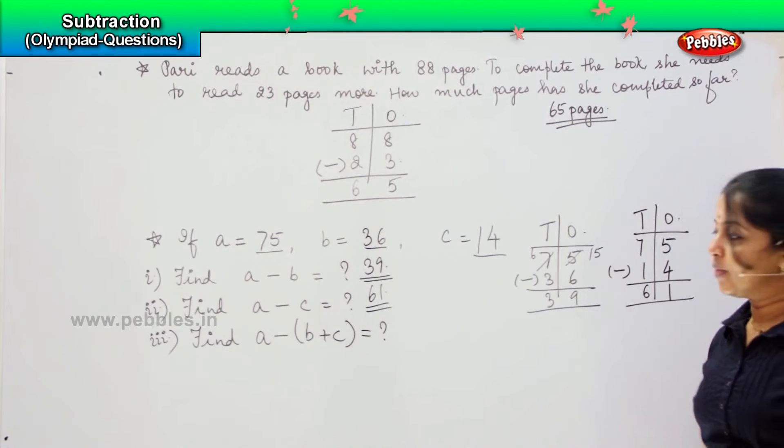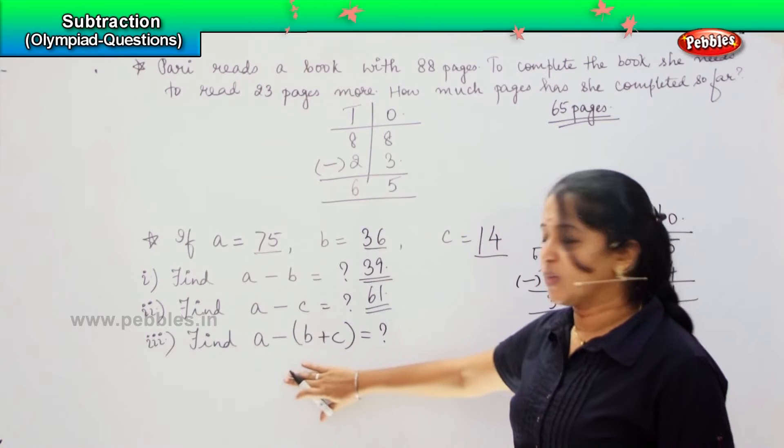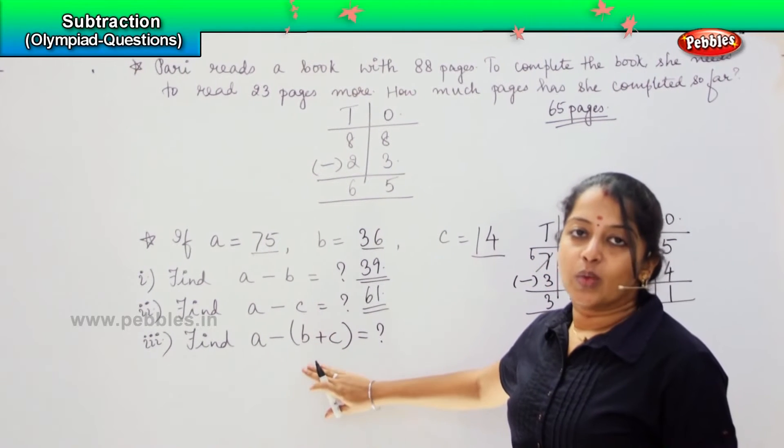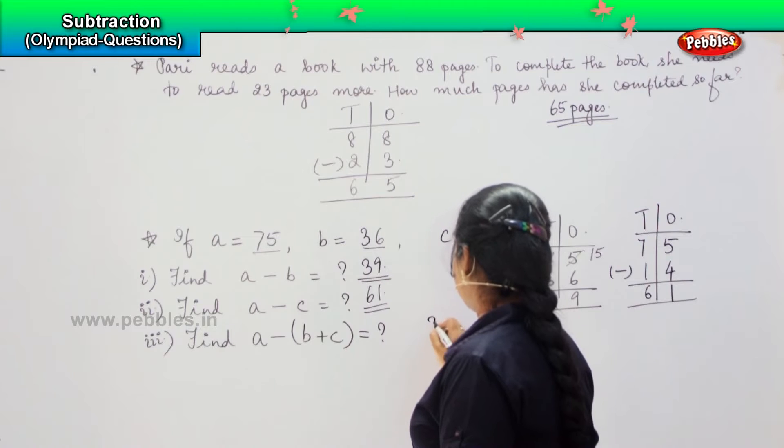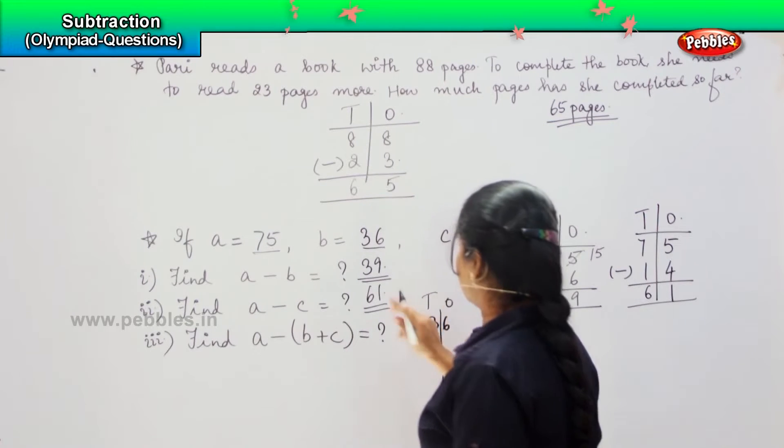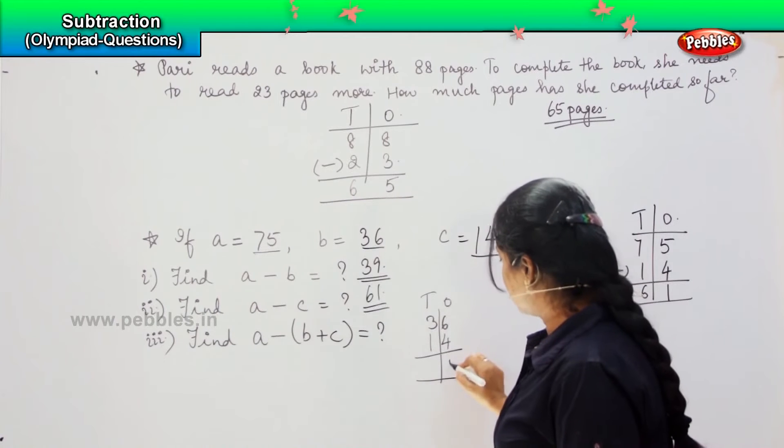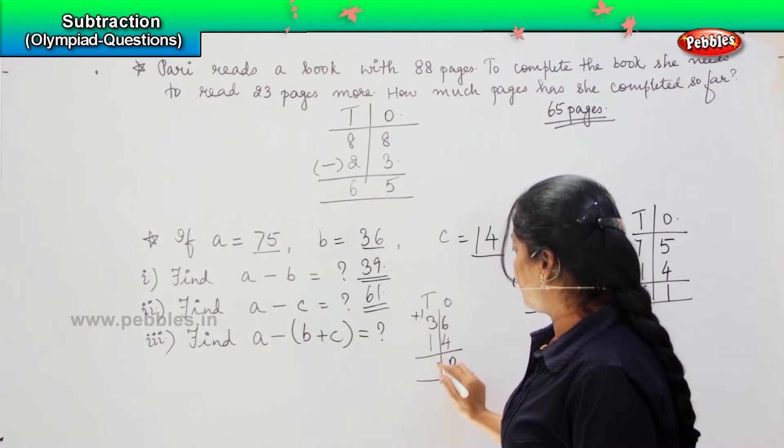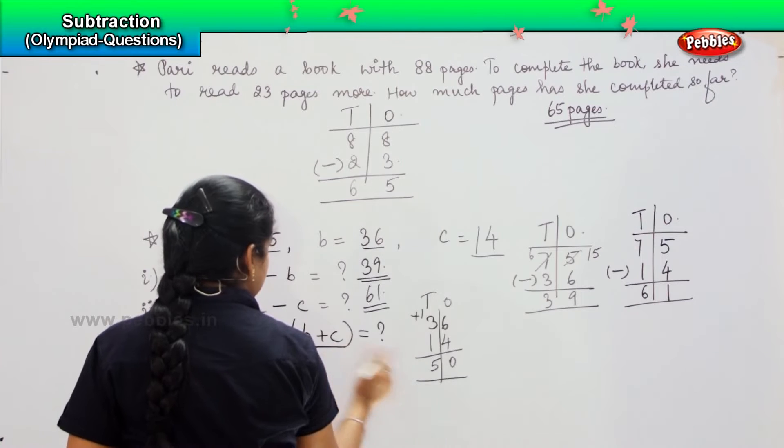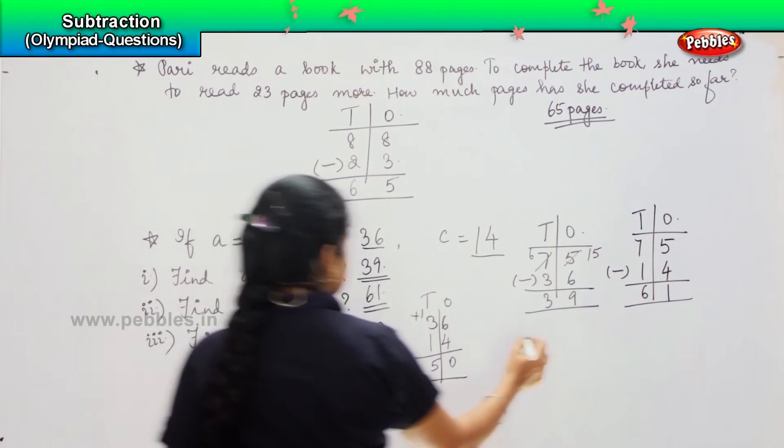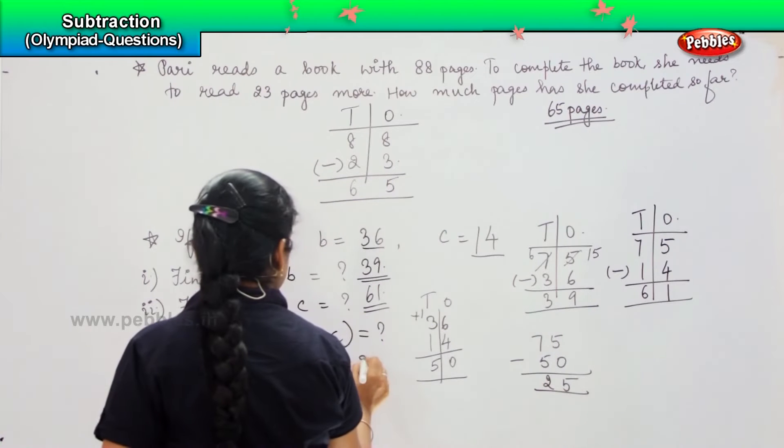The last is little tricky because here we have a combination of subtraction and an addition. It says A minus B plus C. Whenever you get a question like this, first you need to add and whatever is the value, then you need to subtract from the given question. So first what we will do is B plus C, the value of B is 36 and the value of C is 14. We will do the adding, 6 plus 4 is 10, 1 is getting carried forward, so 1 plus 3 is 4, 4 plus 1 is 5. Which means that A's value is 75 minus this B plus C, we have got the answer 50. 75 minus 50, 5 minus 0 is 5 and 7 minus 5 is 2. So my answer is 25.